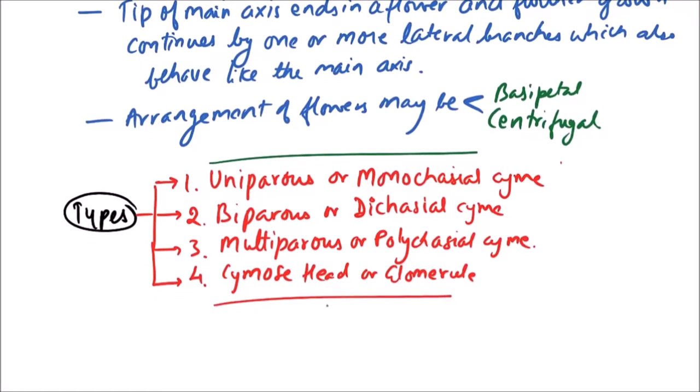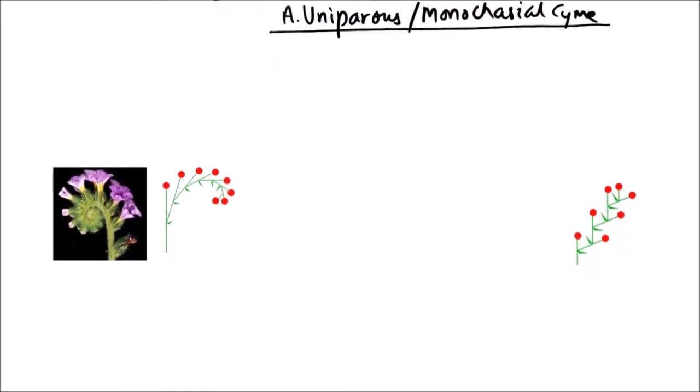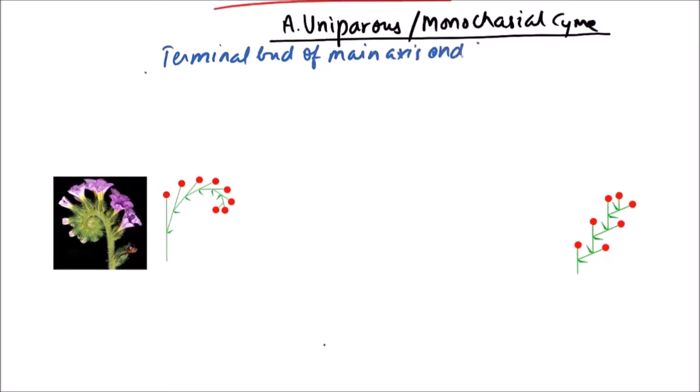Now we will discuss the first type, uniparous or monochaseal cyme. In this type, the terminal bud of main axis ends in a flower and single lateral branch pushes it to one side.